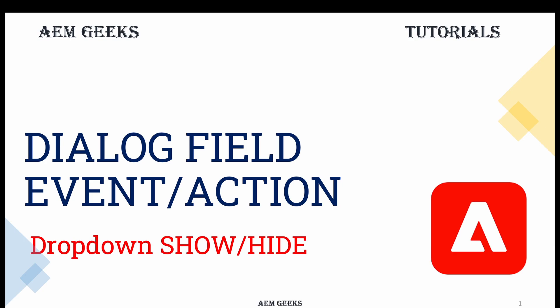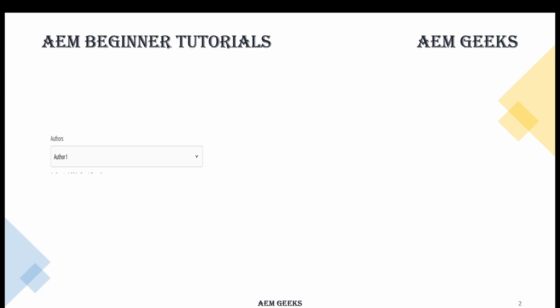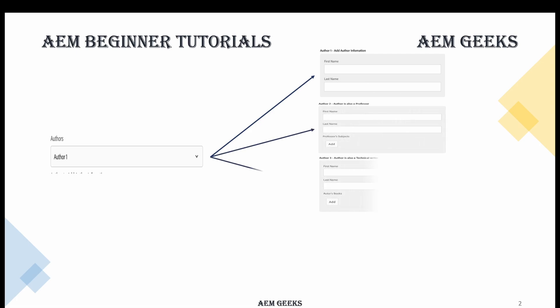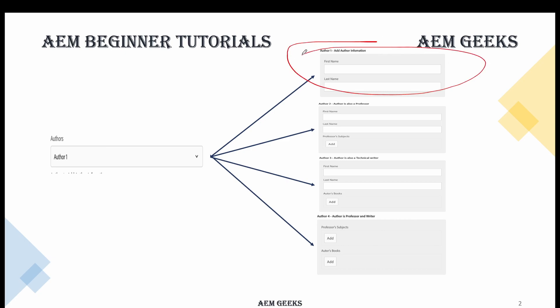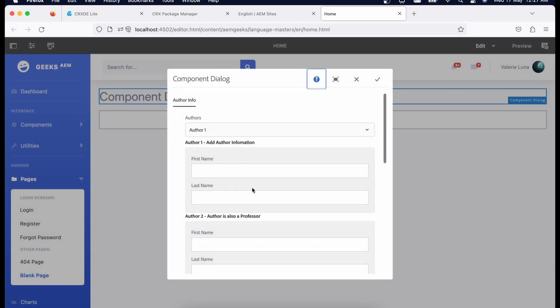Using this example we'll understand event handling in dialog fields. What we'll cover: we'll have a dropdown, and based on a specific item selected in the dropdown, we'll hide and show containers. If you choose a particular item in the dropdown, a container will be visible and other containers will be hidden. For example, if I choose author one, I'll show the first container called author one, and so on.